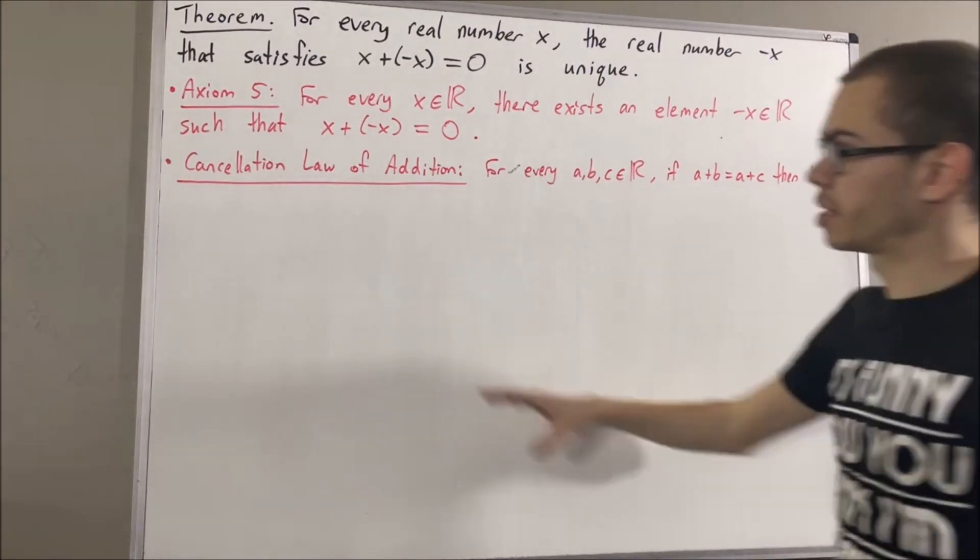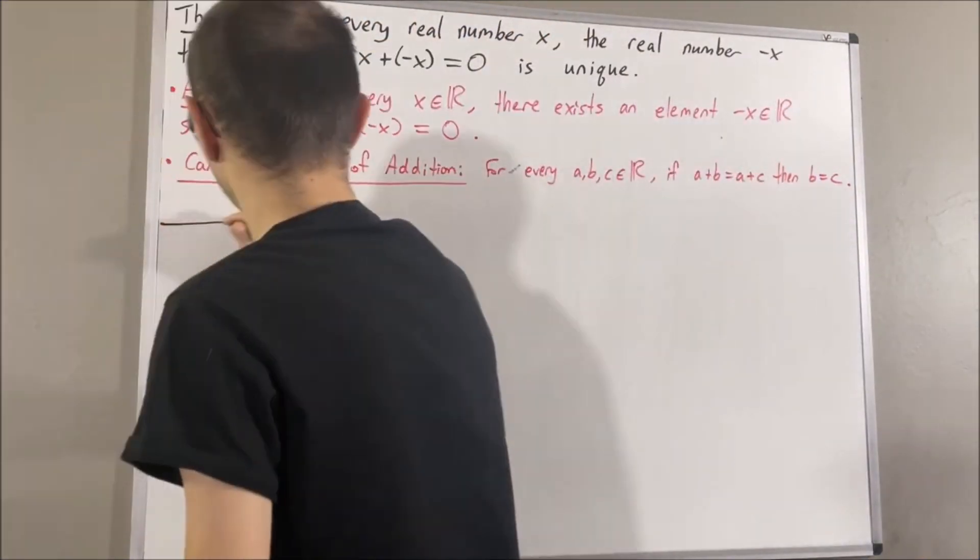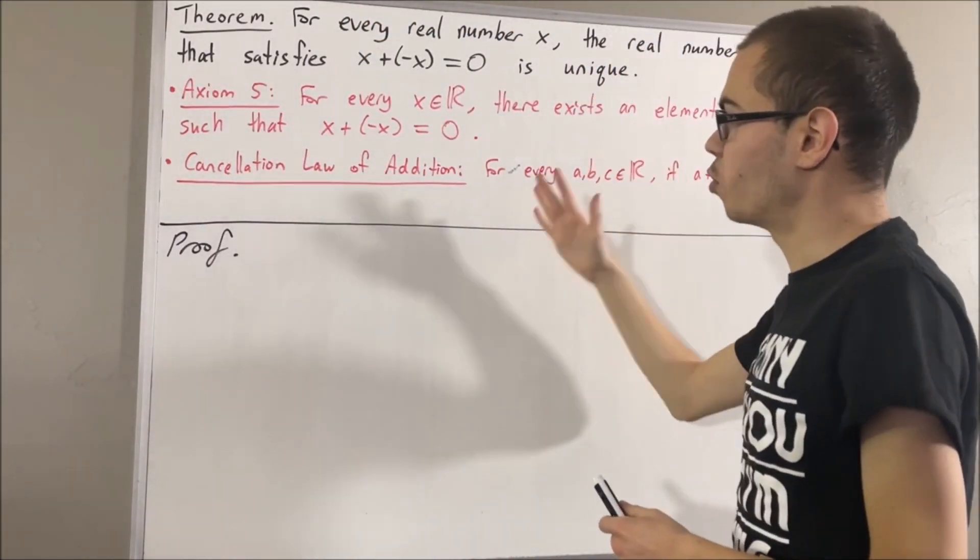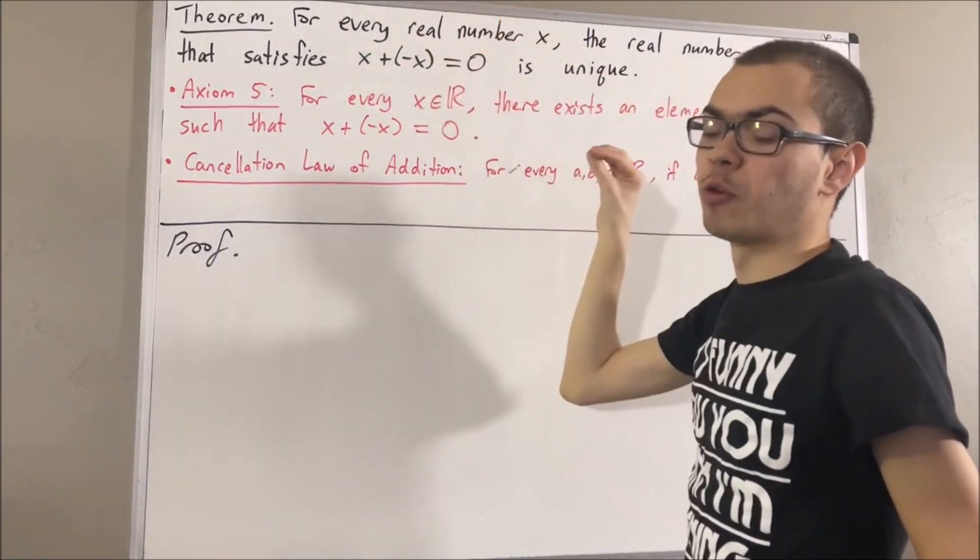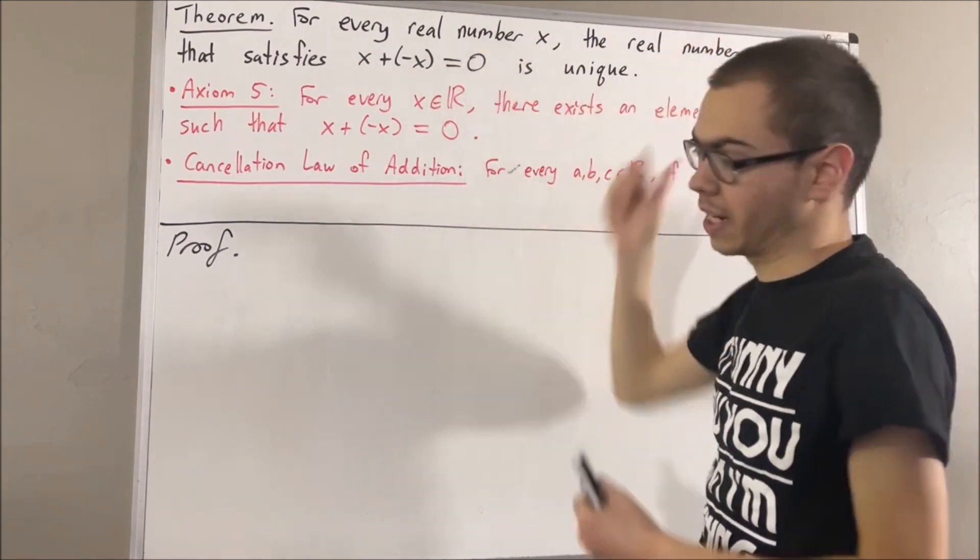Okay, so now let's get into proving this theorem. To start off the proof, since we're trying to prove a statement about every real number, let's give ourselves an arbitrary real number. We'll call it x.